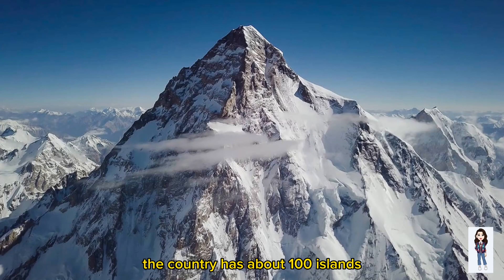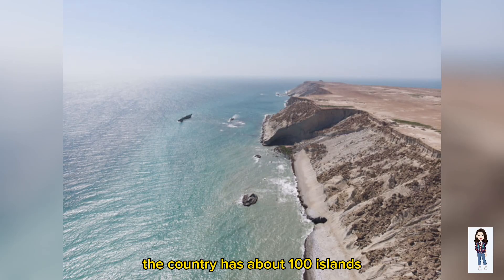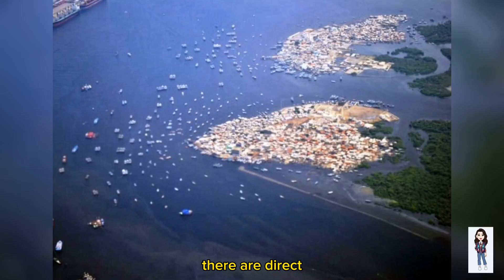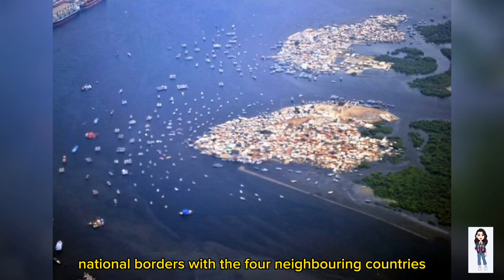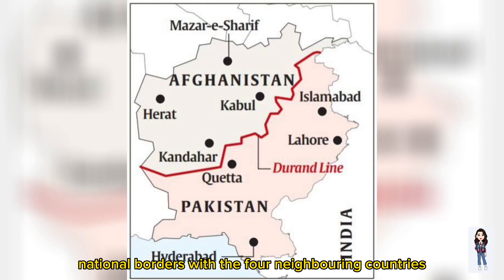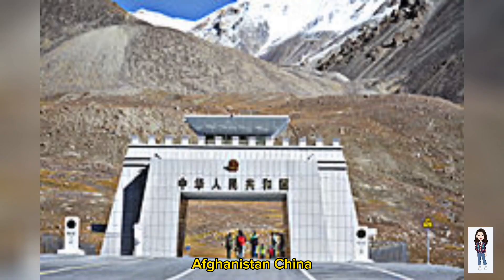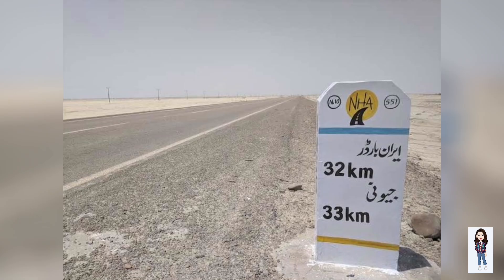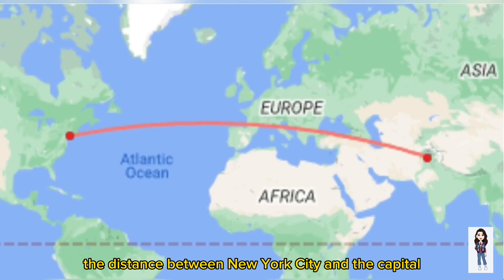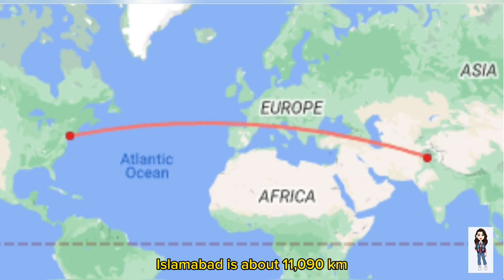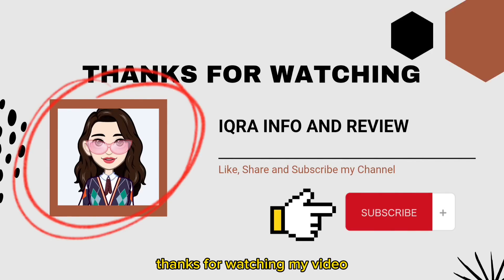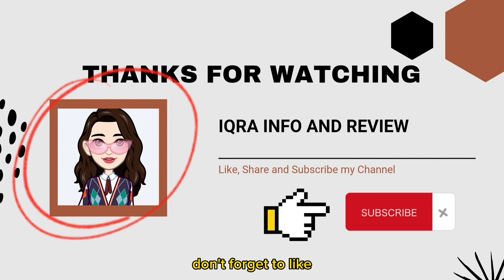The country has about 100 islands. There are direct national borders with four neighboring countries: Afghanistan, China, India, and Iran. The distance between New York City and the capital Islamabad is about 11,090 kilometers. Thanks for watching my video.